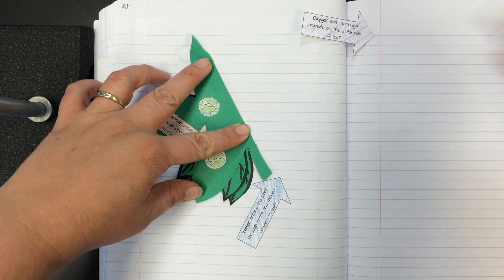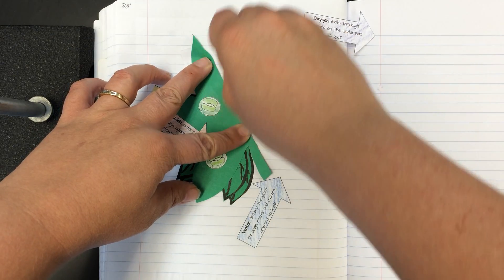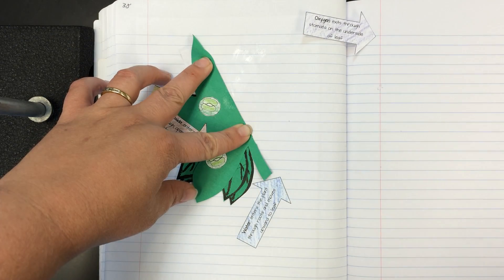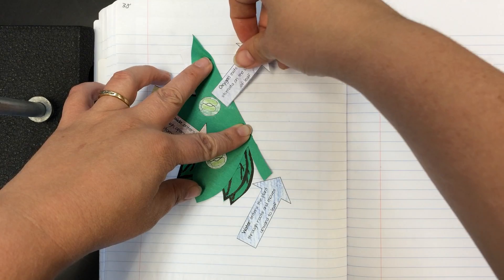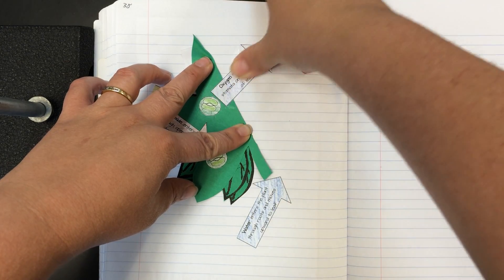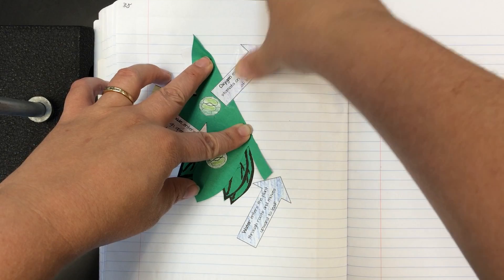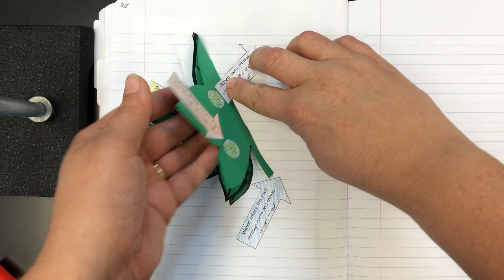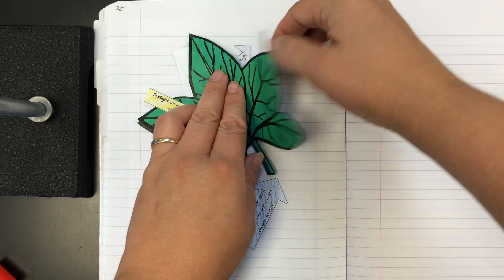So our stomata is allowing oxygen to escape as a byproduct of photosynthesis. So my oxygen arrow is going to go here. I'm going to put it right there. It will also help hold my leaf in place a little bit. And we can put a little bend in that so it lays down nicely.